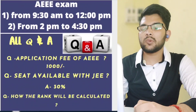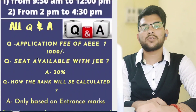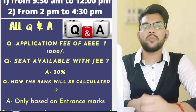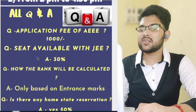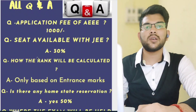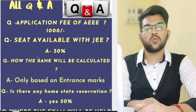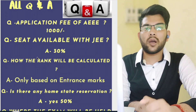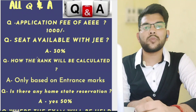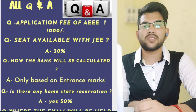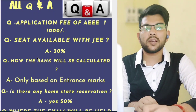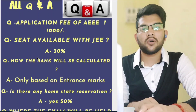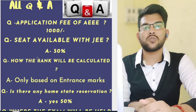Next, how will the rank be calculated? Rank will be calculated purely based on your entrance exam marks — no Class 12 marks will be included. Is there any home state reservation? Yes, there will be 50% reservation. If you are from Karnataka, you will get 50% reservation in Amrita Bangalore. If you are from Tamil Nadu, you will get 50% reservation in the Chennai as well as Coimbatore campus.